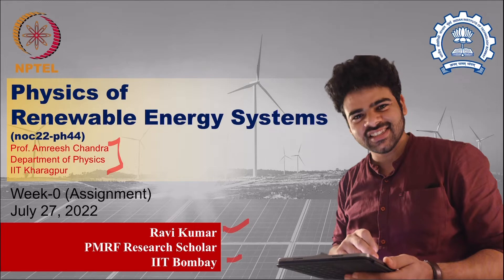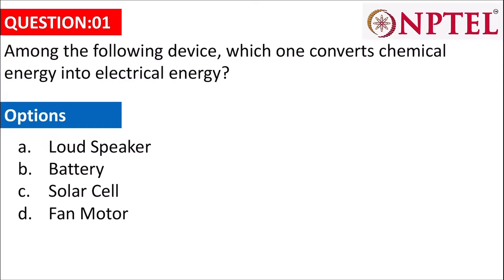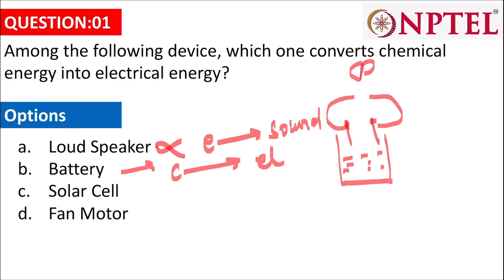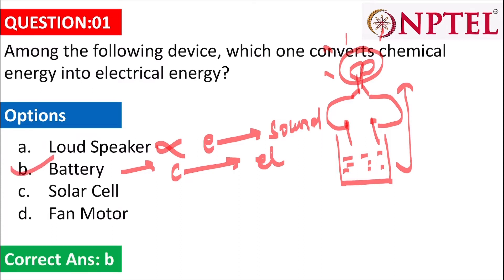Today I'll discuss the Week Zero assignment. The first question asks: among the following devices, which one converts chemical energy into electrical energy? A loudspeaker converts electrical energy into sound energy. A battery converts chemical energy into electrical energy — it has some chemical material and two terminals from which we get current. So the answer is B. A solar cell converts light energy into electrical energy, and a fan motor converts electrical energy into mechanical energy.